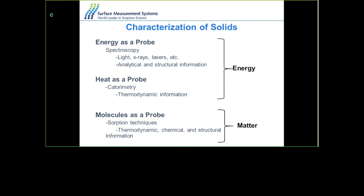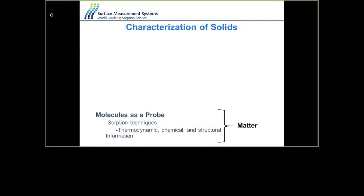Generally for the characterization of solids there are different characterization methods available. Common ones include spectroscopic techniques which use energy as a probe, like x-rays or lasers, and these give you analytical and structural information. Or you could use heat as a probe, like calorimetry, which gives you thermodynamic information. But with the dynamic vapor sorption technique we use molecules as a probe — a sorption technique which gives you thermodynamic, chemical, as well as structural information.